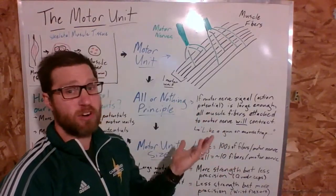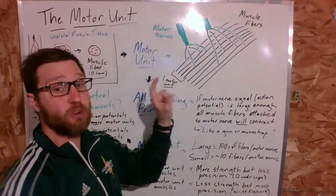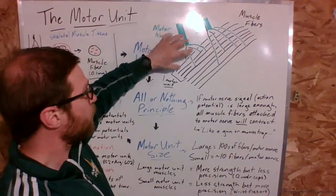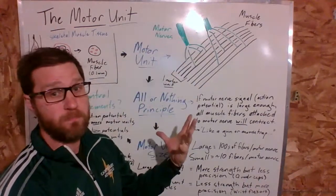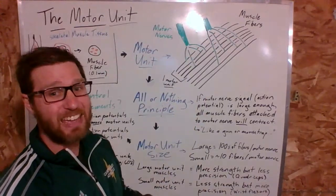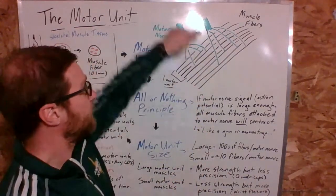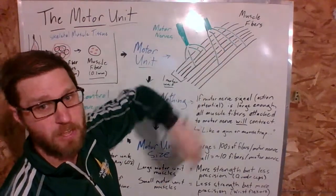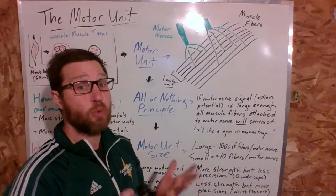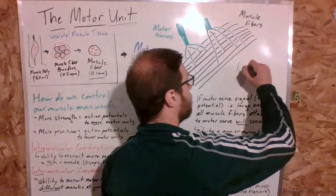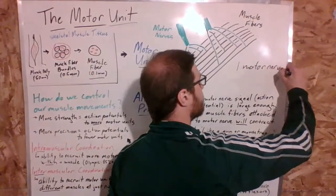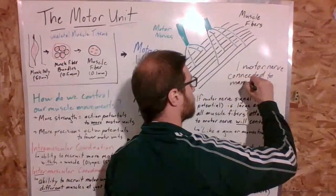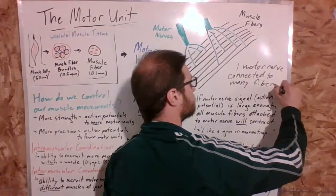You have larger motor units and smaller motor units — we'll talk about that. One motor nerve connecting to a number of different fibers is one motor unit, and you have many of these in your muscles. When the signal from the central nervous system says contract, it will contract those muscle fibers — not all of them, just the ones connected to that motor nerve. If the CNS wants more fibers contracted, it sends a signal to additional motor nerves and they all contract. So a motor unit is one motor nerve connected to many fibers.